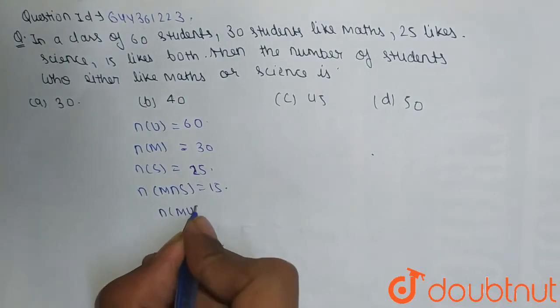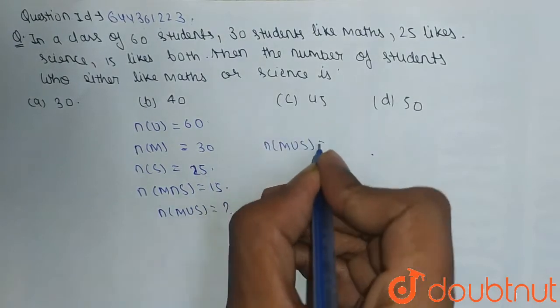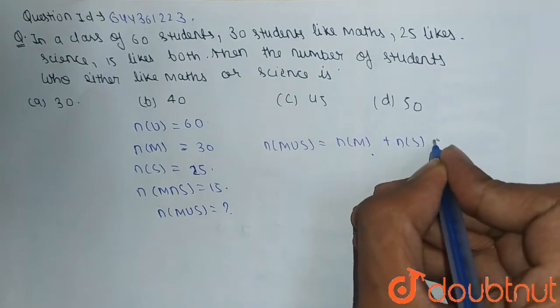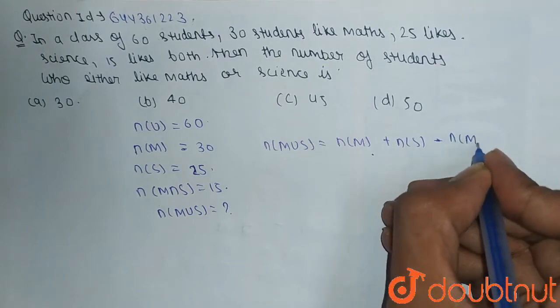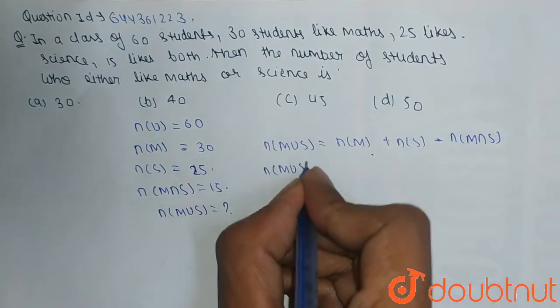So n(M∪S) is equal to n(M) plus n(S) minus n(M∩S). So n(M∪S) is equal to n(M) plus n(S) minus n(M∩S).